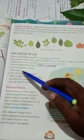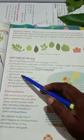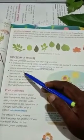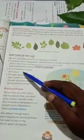Second, in some plants, the leaf stores extra food. For example, spinach and cabbage store food in their leaves.